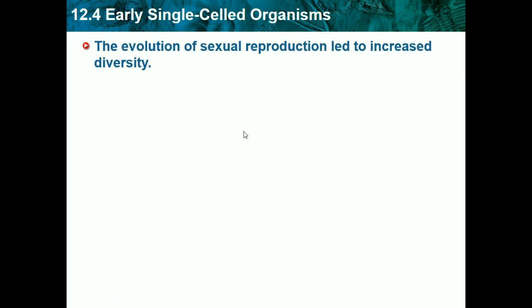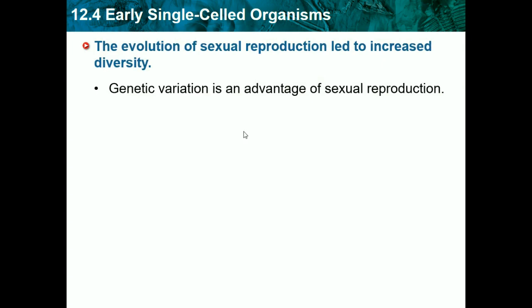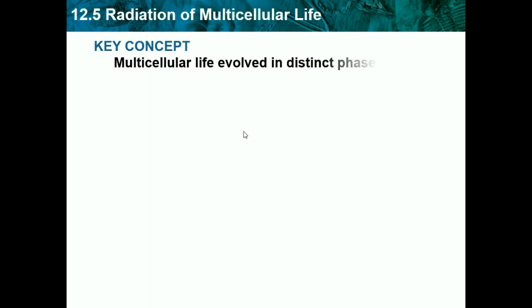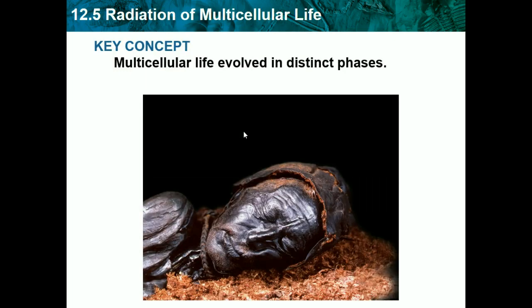The evolution of sexual reproduction led to increased diversity. Genetic variation is an advantage of sexual reproduction. We gained sexual reproduction as an evolutionary development. Sexual reproduction may have led to the evolution of multicellular life. Now, moving to section 12.5: radiation of multicellular life.